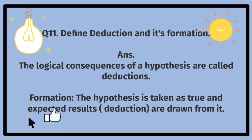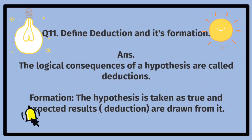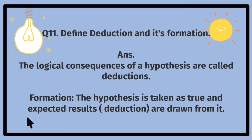Define deduction and its formation. The logical consequences of a hypothesis are called deductions. Formation: the hypothesis is taken as true and expected results — deductions — are drawn from it. Deduction aur is ki tashkeel ki wazahat karein. Kisi maafroog ke mantaqi nataaij ko deductions kehte hain. Tashkeel: maafroog ko sach ke tor par liya jata hai aur mutawaqqa nataaij, deductions, is se afshaah kiye jaate hain.